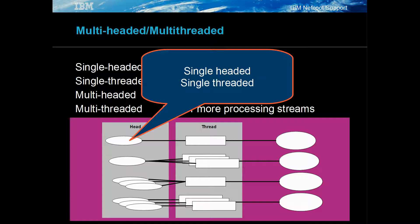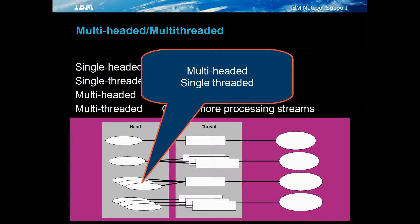Single-headed, single-threaded probes read events from a single head and process these events serially. Single-headed, multi-threaded probes read events from a single head, but process these events in parallel using multiple threads. Multi-headed, single-threaded probes read events from multiple heads and place these events on an event queue for event processing by a single thread.